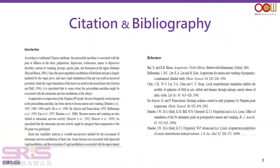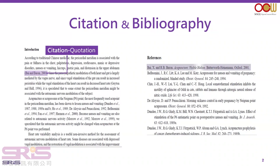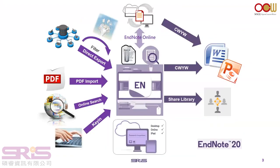Let me begin by explaining why we should use EndNote in our academic writing. We all know that referencing is a very important part of academic work. It helps us to avoid plagiarism by making it clear which ideas are our own and which are someone else's. We should reference whenever we use someone else's idea. With the help of EndNote, we can collect, organize, manage, and even format citations for our research efficiently.